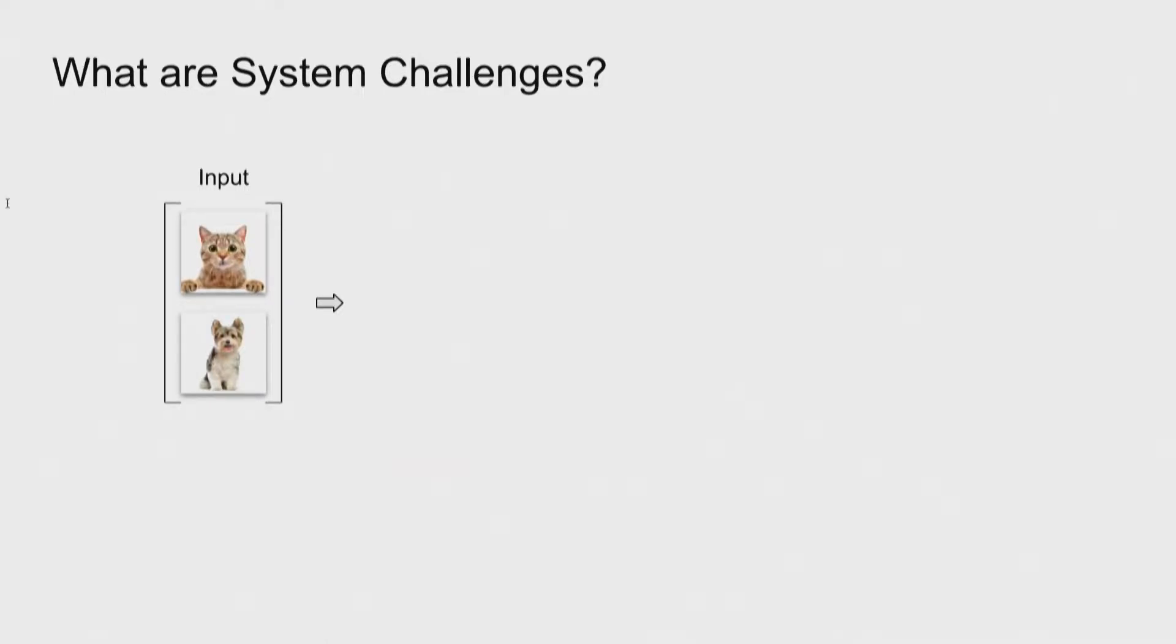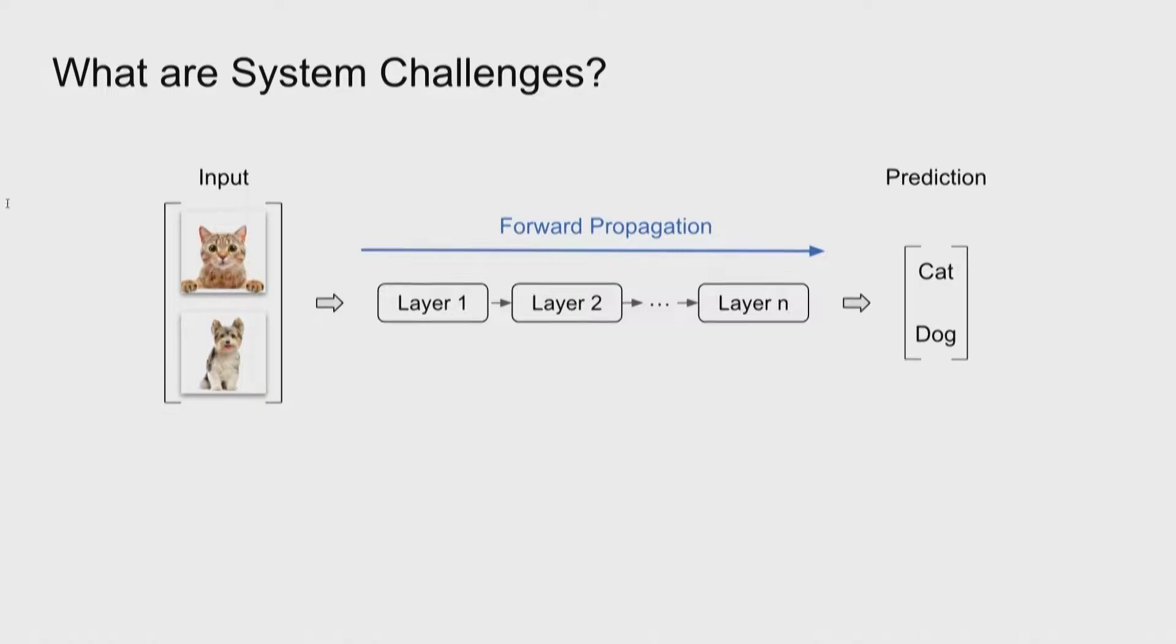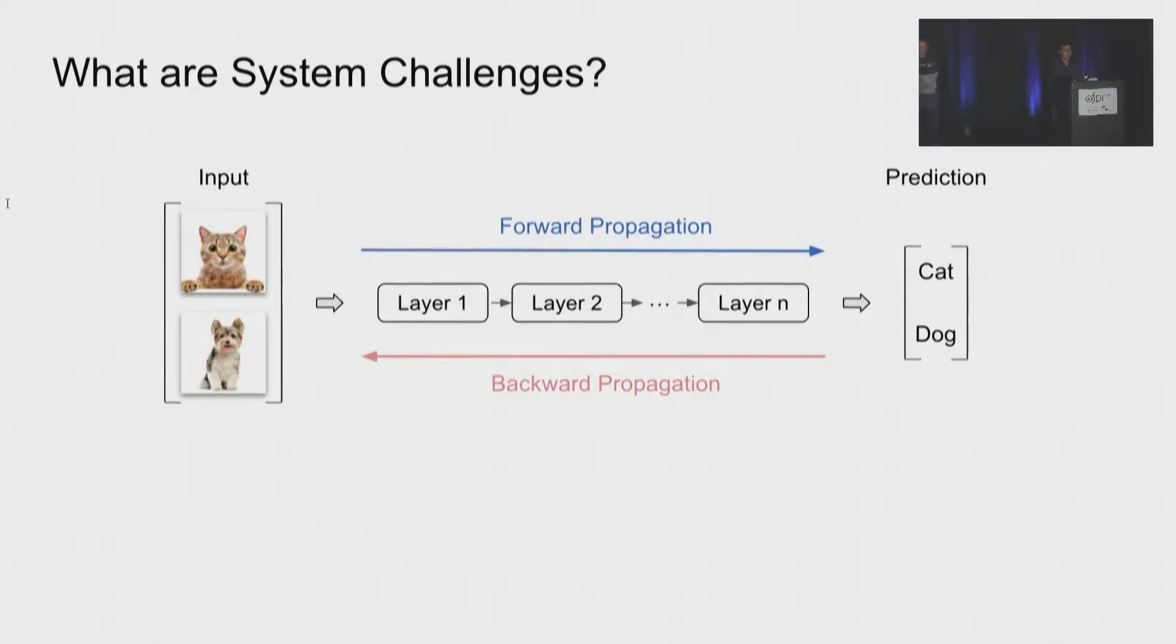Okay, if it's a system problem, then what are the system challenges? Let's begin with the computation pattern of deep learning. First, we have a batch of input images. We feed the input into the deep learning model. The computation involves a forward propagation to compute the prediction and a backward propagation to compute the gradients and update the model.